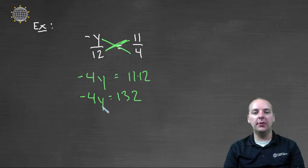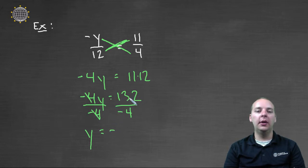So let's solve this, we'll divide by the variable's coefficient, divide both sides by negative four, and these will cancel on the left hand side.